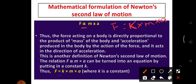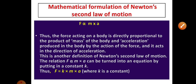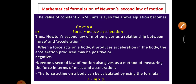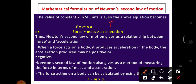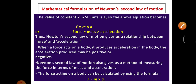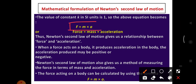The force acting on a body is directly proportional to the product of mass and acceleration. The value of the constant K is 1, so we get F = 1 × MA, which gives F = MA. Here F represents force, M is mass, and A is acceleration. This is Newton's Second Law of Motion.